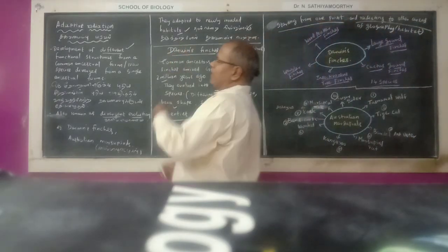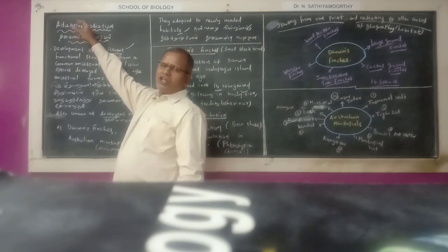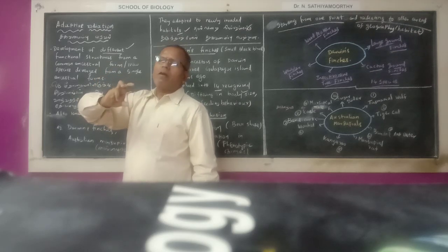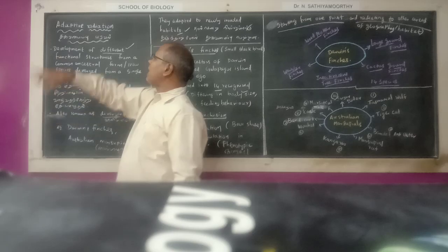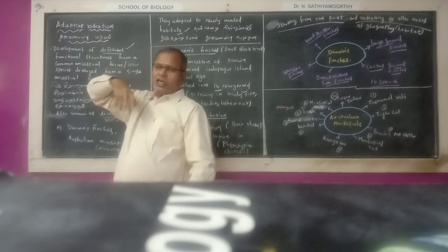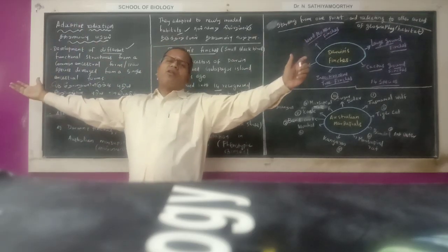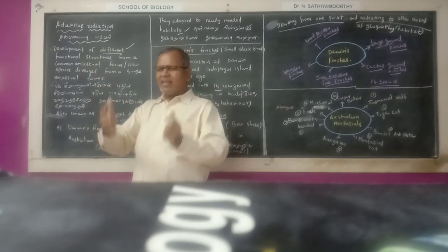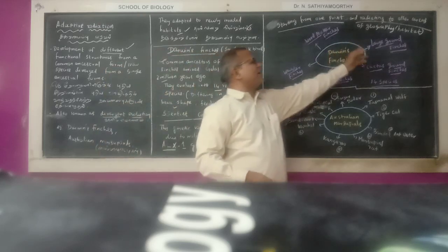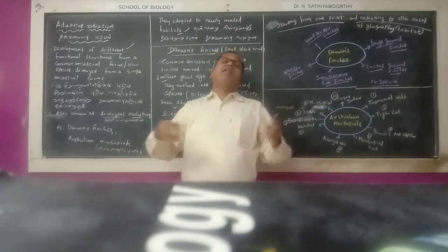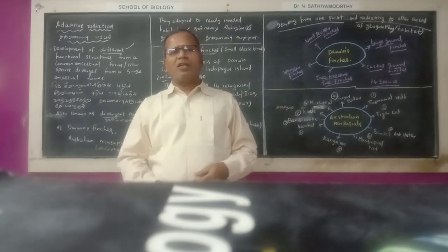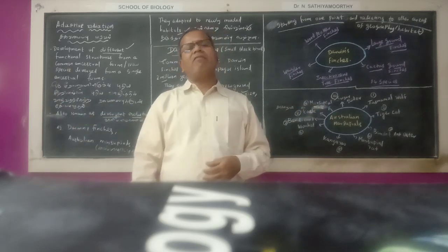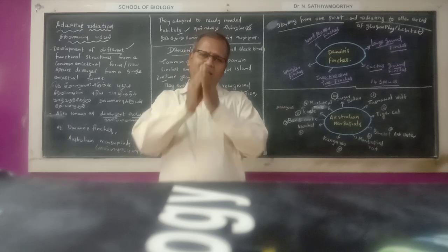Adaptation means changing itself to the environment or to the habitat. Due to adaptation, they radiate from a single ancestor — this is called adaptive radiation. It is divergent from a single parent. Next is Convergent evolution. Thanks a lot for hearing, thank you.